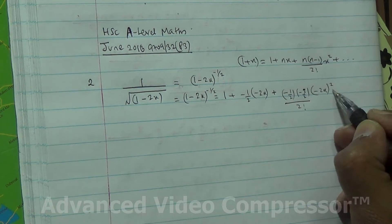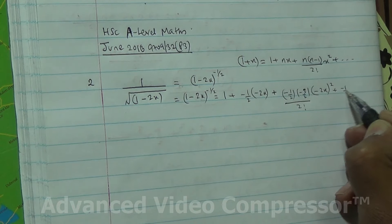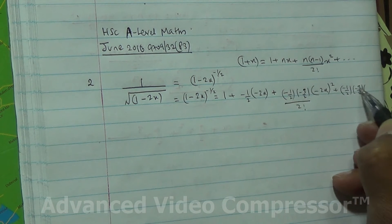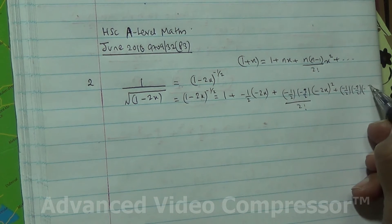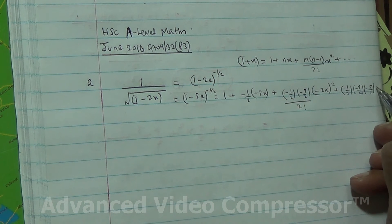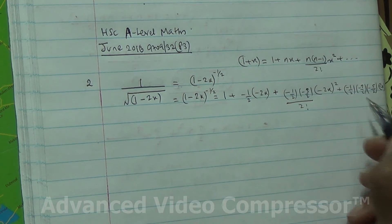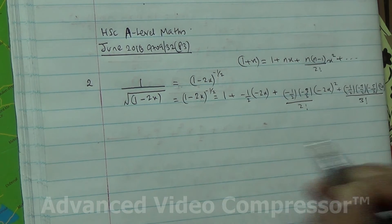Plus then minus half times minus 3 over 2, and if you take minus 3 over 2 minus 1 you get minus 5 over 2, all of that times minus 2x to the cube, divided by factorial of 3.